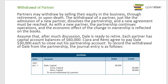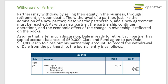The withdrawal of a partner — partners may withdraw by selling their equity through retirement or death. Just like the admission of a new partner, withdrawal dissolves the partnership and a new agreement must be reached, though the partnership continues operations. Assume that after much discussion, Dale is ready to retire. Each partner has a capital account balance of $60,000. Sierra and Remy agree to pay Dale $30,000 each to close out his account. The journal entry debits Dale Capital $60,000 and credits Sierra Capital $30,000 and Remy Capital $30,000.